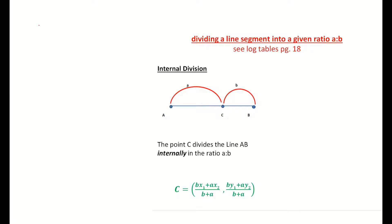In this video, we're looking at dividing a line segment into a given ratio A is to B. Before we get into looking at an example, I've just taken down the formula from our log tables, which is in green down the bottom here. It's on page 18 in your tables.